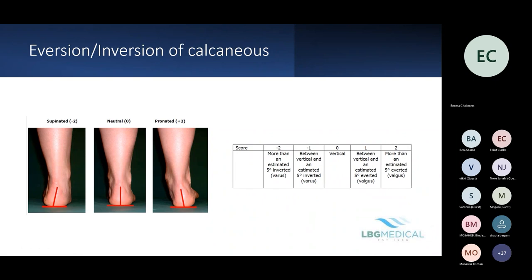For eversion and inversion of the calcaneus, you're looking at whether the calcaneus is leaning in or out. If it's vertical, you score zero. For a pronated foot you're looking at a score of one or two — more valgus — and for the minus scores, more varus.